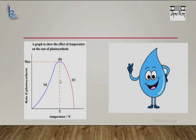Temperature has three cardinal points: minimum, optimum, and maximum. At minimum temperature, the rate of photosynthesis starts and progresses. The rate of photosynthesis is maximum at the optimum temperature, and the rate stops at maximum temperature. Water acts as a raw material for photosynthesis, so it will definitely enhance the rate of photosynthesis.